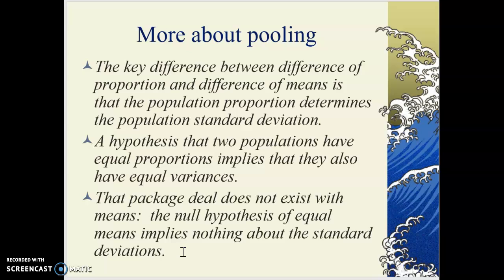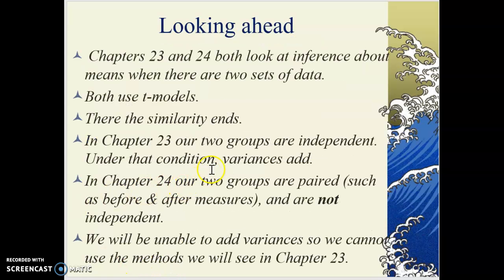The hypothesis that two sets are equal in their means tells us nothing about the standard deviations. So we're going to look at inferences about means when we have two sets of data using t-models and t-distributions. In this chapter we have independent groups, so we add variances. In Chapter 24, our two groups are paired — for example, looking at before and after conditions, like the same person's weight before and after a diet. Those two weights are not independent of one another, so it's a different situation.